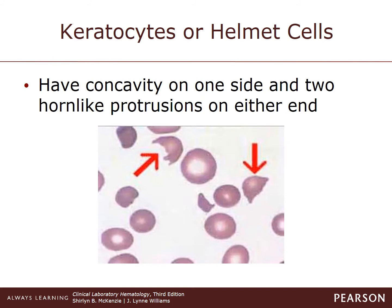Keratocytes, or helmet cells, have a concave on one side and two horn-like protrusions at the other end. They're produced when a fibrin strand impales the erythrocyte and the two halves hang over the strand like saddlebags, and the membrane of the touching sides fuse, producing a vacuole-like inclusion on one side.